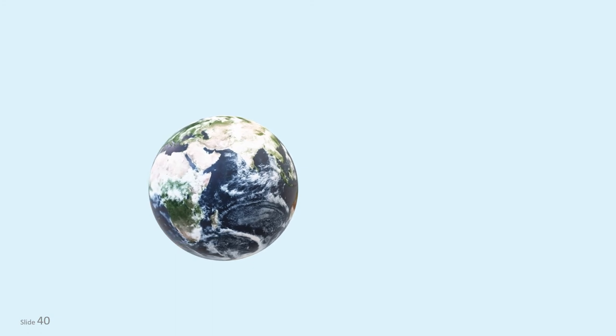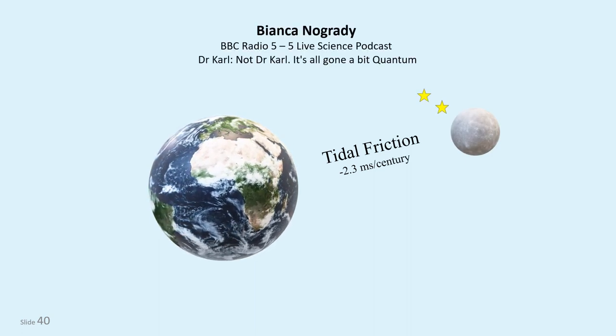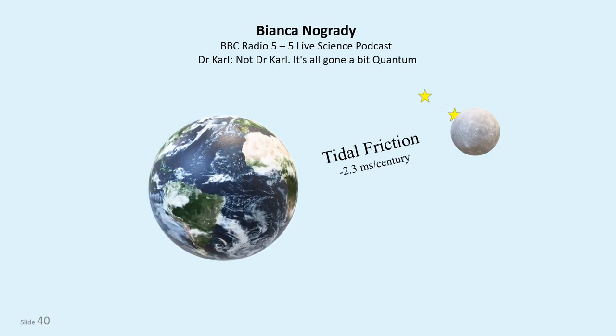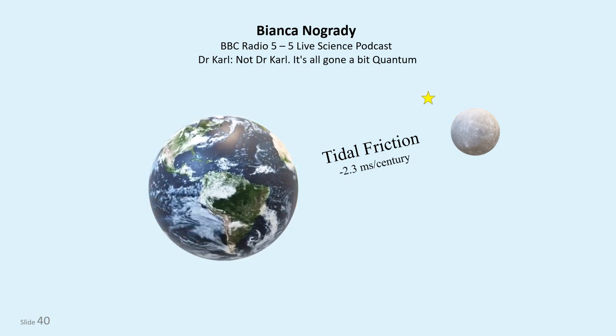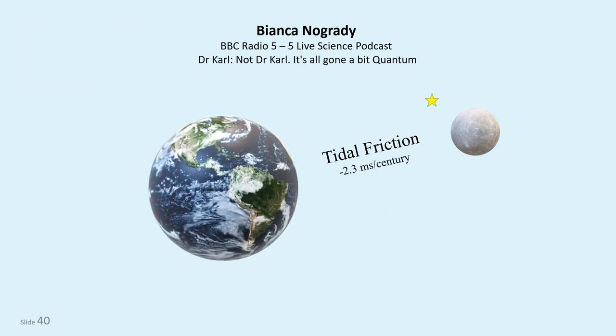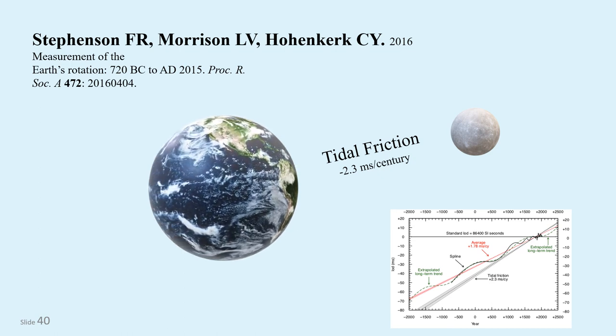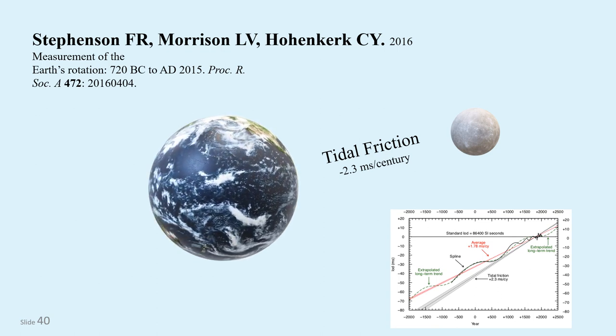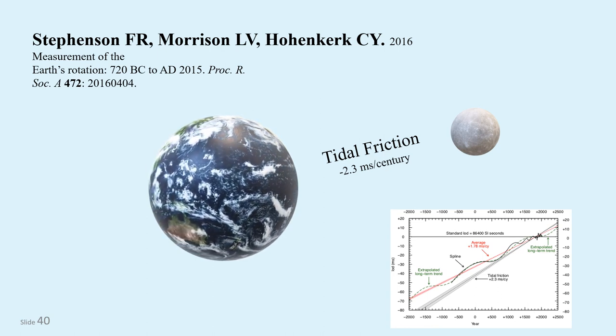For one thing, the Earth is slowing down due to tidal friction with the Moon. Then I heard Bianca Nogrady on BBC 5 Live Science podcast talking about ancient observations of eclipses and occultations that reveal something unexplained countering that tidal friction. A small effect, but one that adds up over time. These scientists have taken the precise measurements of tidal friction and the rotation of the Earth as measured with atomic clocks, and used this information to calculate when and where we should have observed eclipses and occultations in the past, and found a mismatch with actual recorded observations.